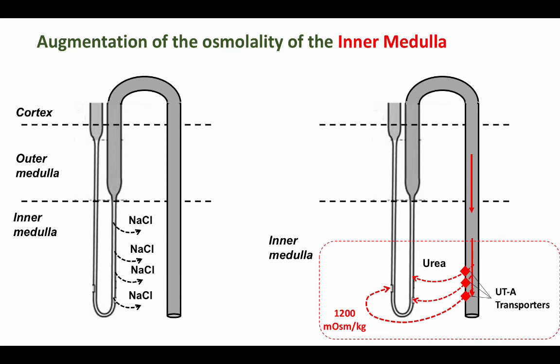You may well ask, what other evidence do we have for this role of urea? Firstly, the newborn has a poor urine concentrating ability due to the decreased availability of urea at this stage to maintain medullary hypertonicity.